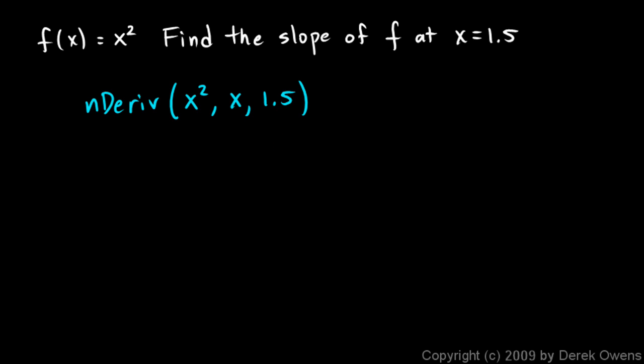And so what the calculator does, it actually is going to calculate values. X squared as we know looks something like this. And it's going to come over here to x equals 1.5. And it's going to go to the right of 1.5 a very tiny amount, 0.001. And I'm exaggerating it in this picture. And it's going to go to the left of 1.5 by 0.001. So it's actually going to be finding these values here: 1.5001 and 1.499.